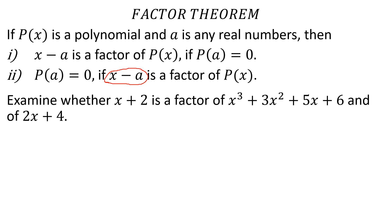To check this factor, if we have x plus 2, we compare it to the form x minus A. So x plus 2 means x minus (-2), which gives us A equals minus 2.